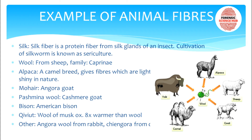Mohair is obtained from the Angora goat. Pashmina wool is obtained from the cashmere goat. Bison fiber is obtained from the American bison. Qiviut fiber is obtained from the wool of the musk ox and is eight times warmer than regular wool. Angora wool can also be obtained from rabbit. Chiengora wool is obtained from dog.